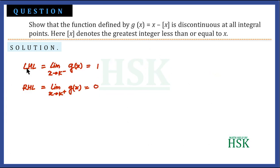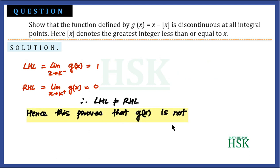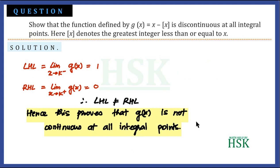So the left-hand limit equals 1 and the right-hand limit equals 0. Since the left-hand limit is not equal to the right-hand limit, this proves that g(x) is not continuous at all integral points, because we took k to be any integer. That's how we solve this question.